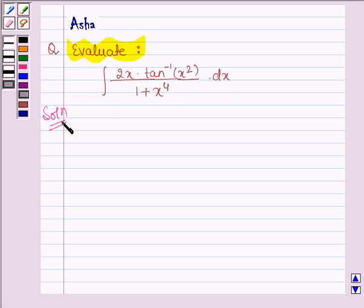Let's start with the solution. So we have to integrate 2x into tan inverse x square divided by 1 plus x raised to the power 4 into dx.